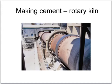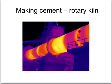Nowadays cement is made in a large rotary kiln such as this one. You get an idea of the scale when you see the size of the doorways in the distance. The raw materials for making cement are dried clay and crushed limestone. These are heated together in this rotary kiln at very high temperatures, where a chemical reaction happens to make cement.